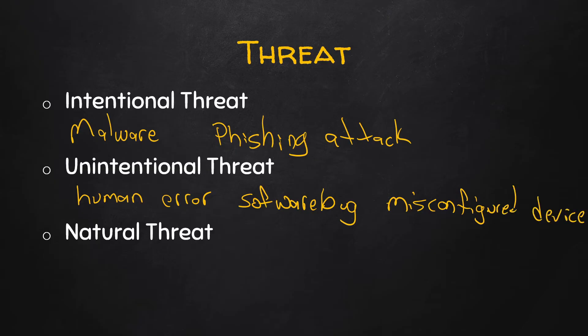The real difference here is the intent — did the threat actor, whoever caused this, mean for this negative consequence? Intentional threats like malware and phishing attacks are designed with a specific goal — to obtain information or destroy assets. Unintentional threats are accidents — not the intended consequence.